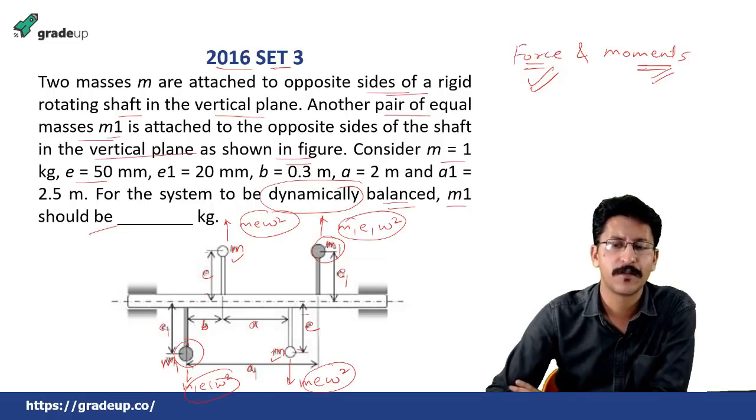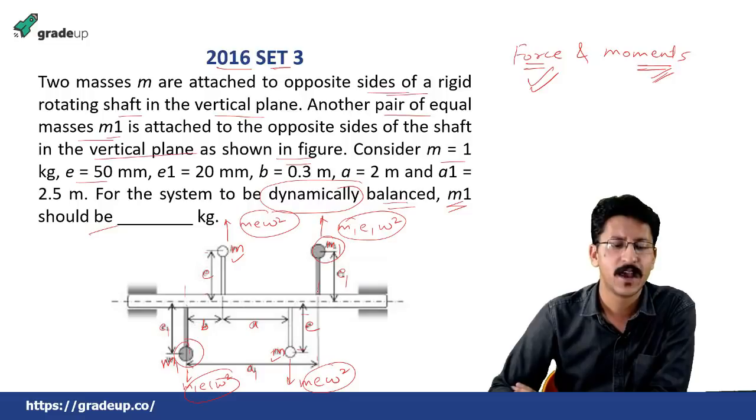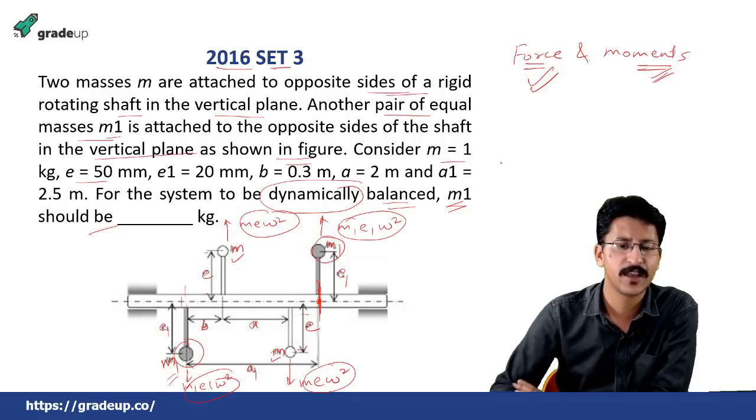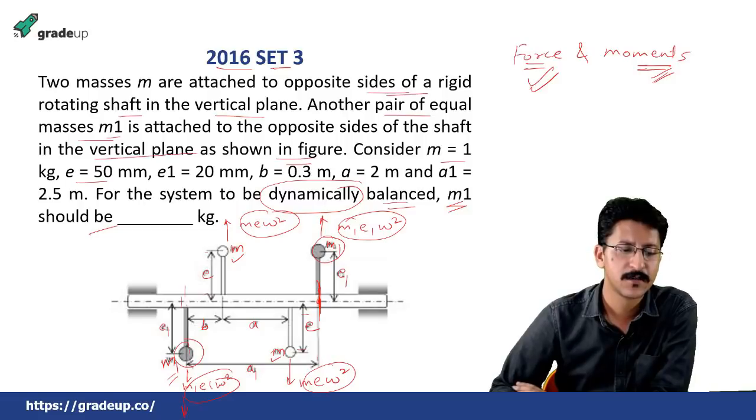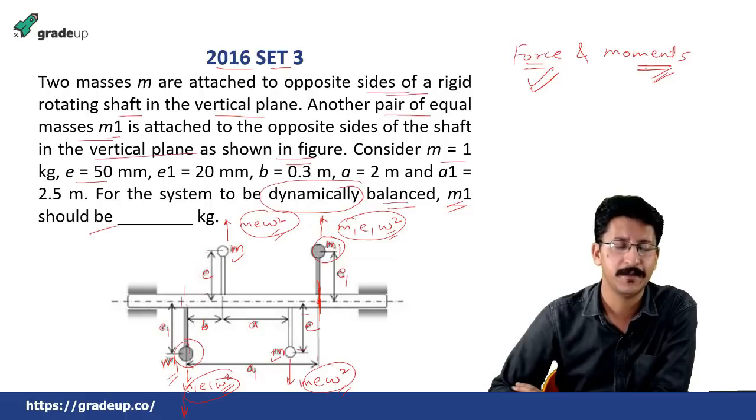Then you need to find or balance the moments and you need to find the m1. So either from this axis or along this axis, just balance the moment either from this or from this. So we are considering this axis for balancing the moments. This is the force that is m1 e1 acting towards this. But this omega effect can be neglected from all the forces as they are equal for all the cases.